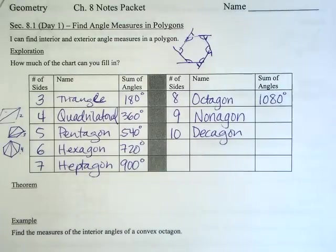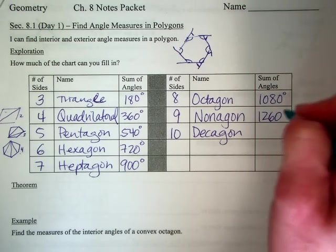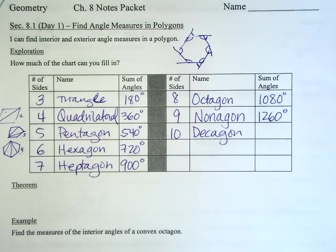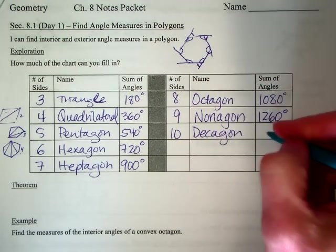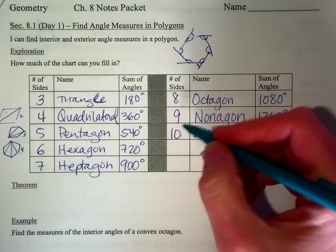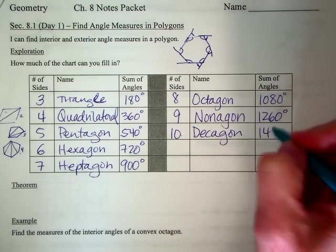A non-agon is seven times 180, so 1260. And a decagon is eight sides. I'm sorry, it's ten sides, but we do eight because it'll have eight triangles, so 1440.